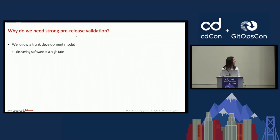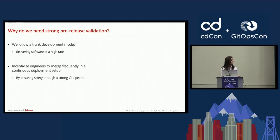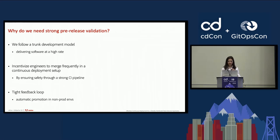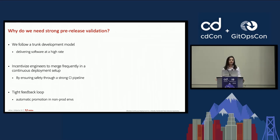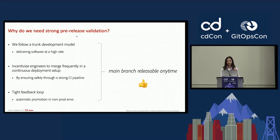We follow a trunk development model, which means we aim to deliver software at a high rate. In a continuous deployment setup, engineers might feel hesitant about merging changes frequently to the main branch, so it's very important not to compromise on safety. This starts with high quality code in the main branch, ensured by a strong CI pipeline. Enabling automatic code promotion to non-production environments creates a tight feedback loop for functional and non-functional validation, ensuring the main branch is releasable at any time.